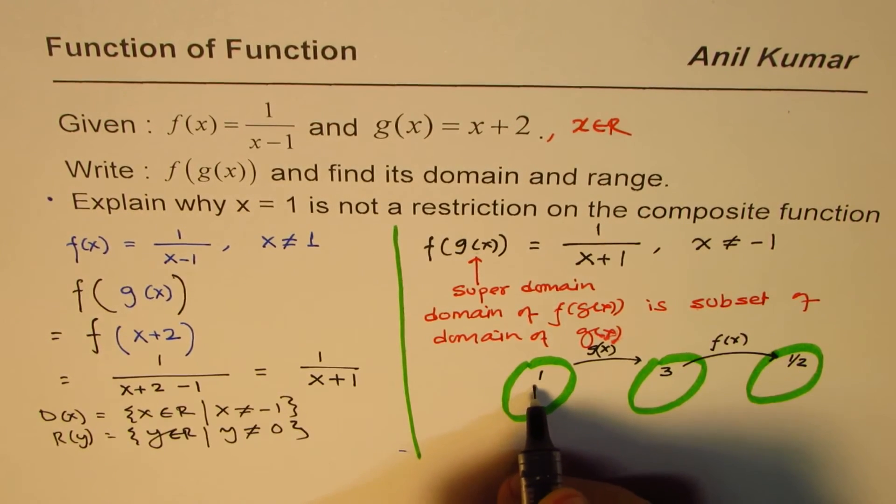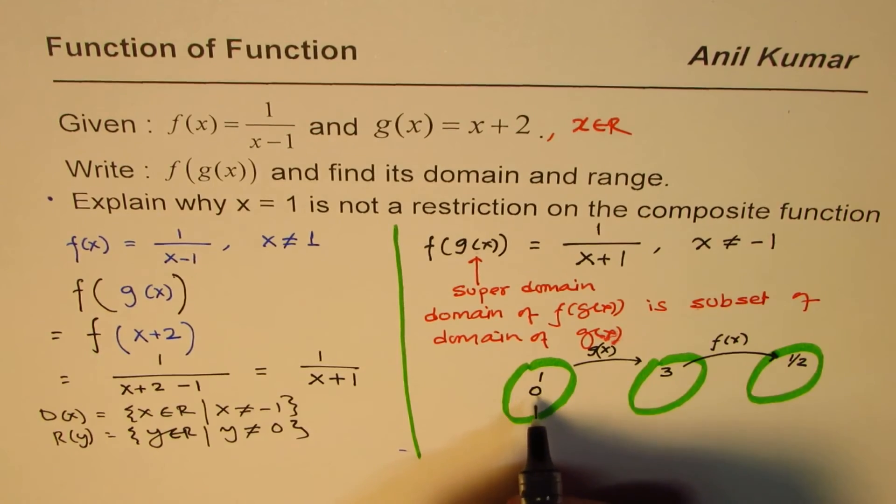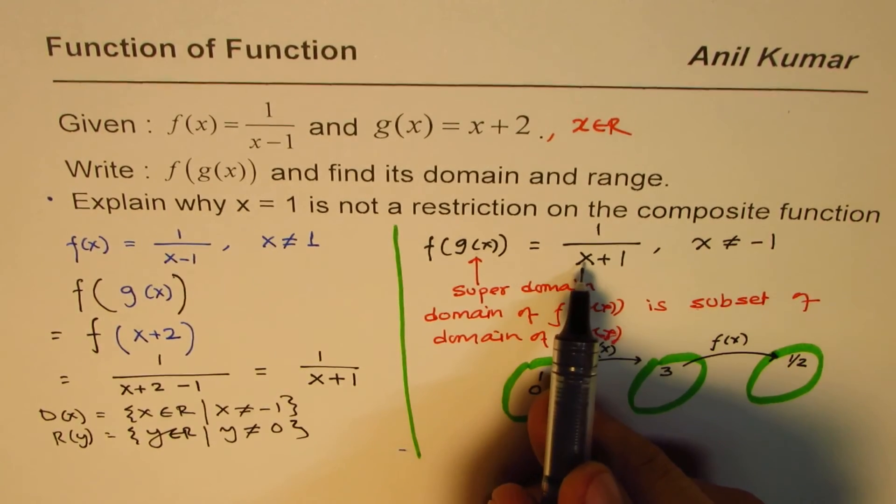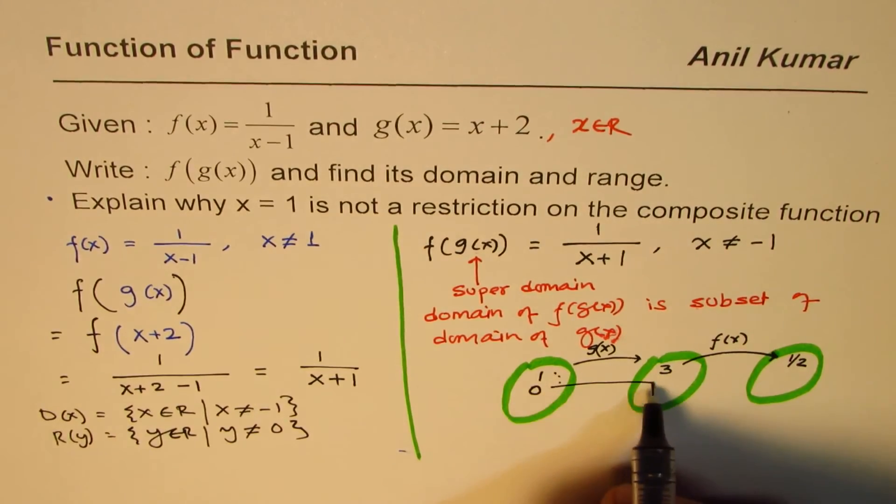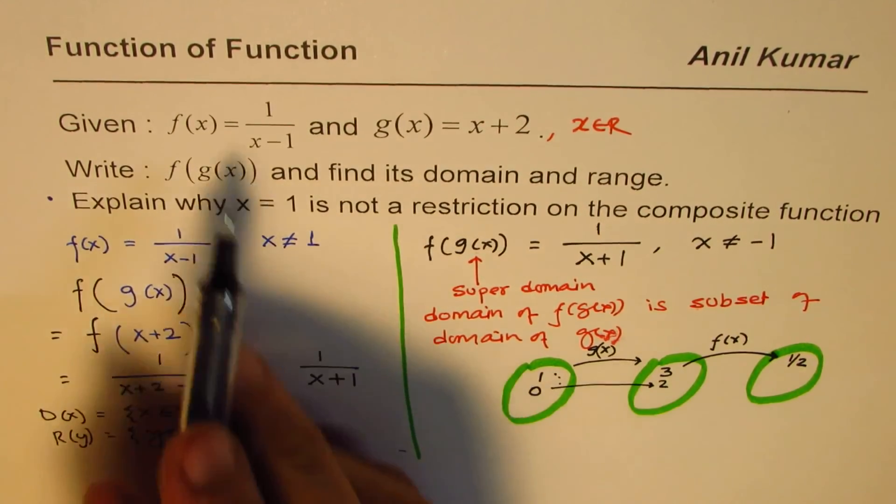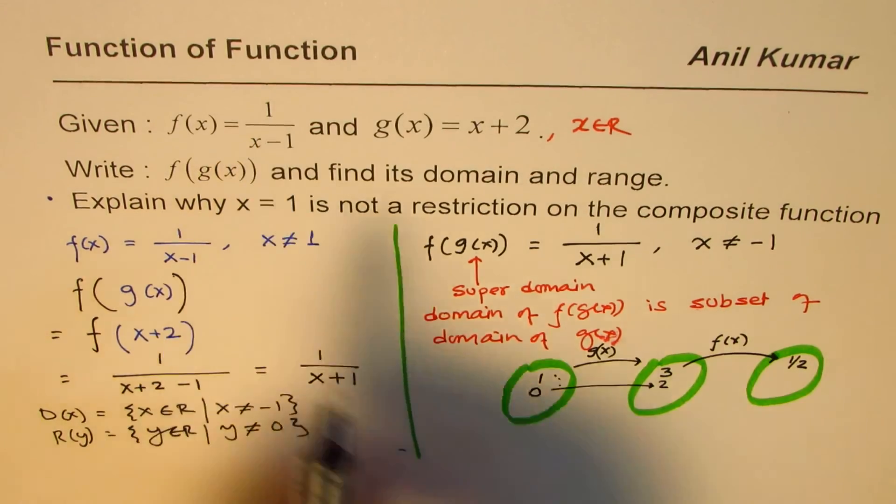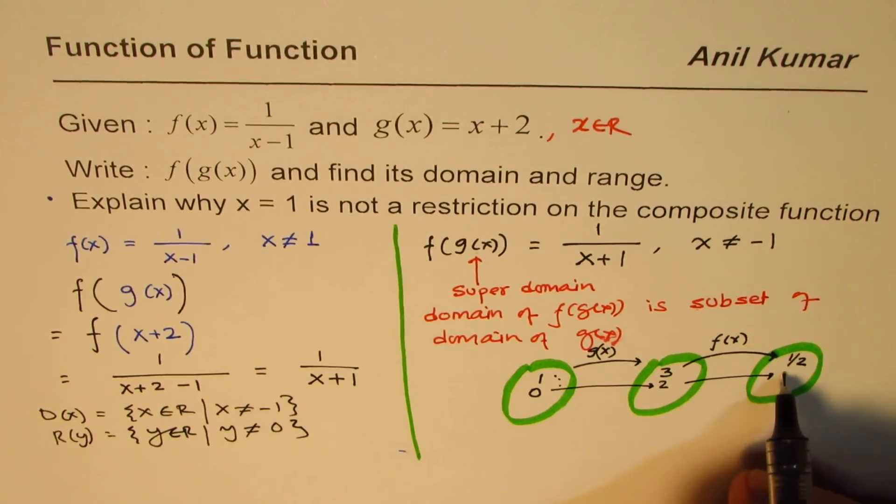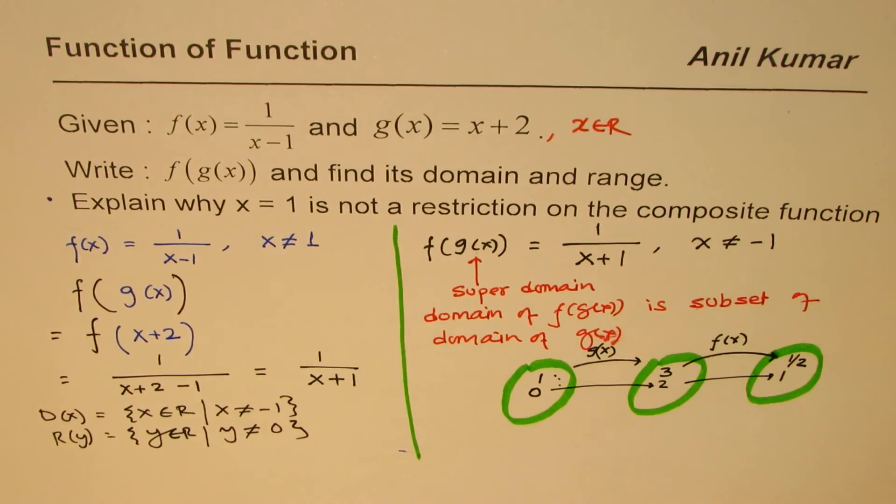Let me write one more value just to check. If I write 0 here, then I get 0+2, I get 2. If I substitute 2 for f(x), I get 1/(2-1) which is 1.